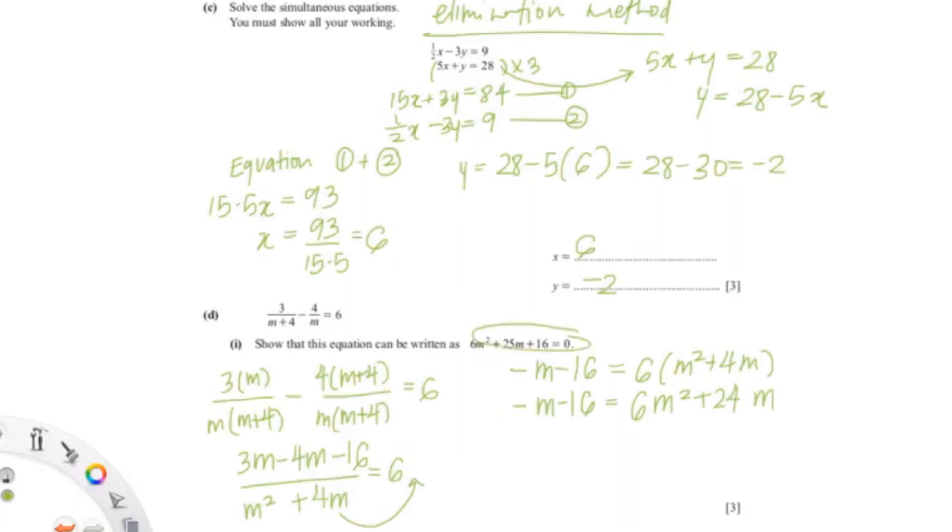And now I'm going to bring -m and -16 to the other side, which would give me 0=6m²+24m+m+16. And these are like terms, so we can simplify them, which would be 0=6m²+25m+16.